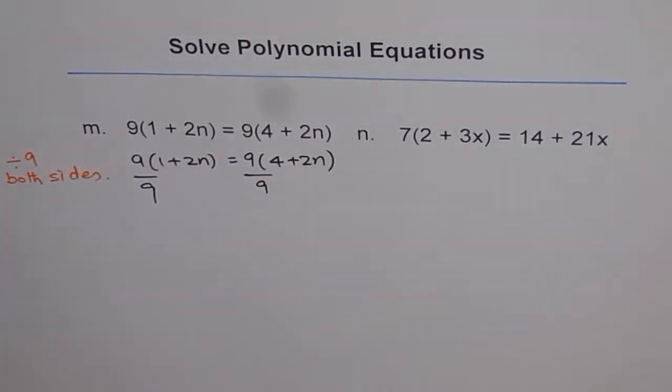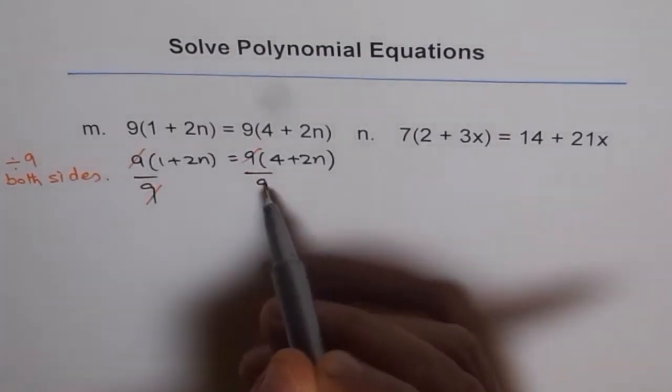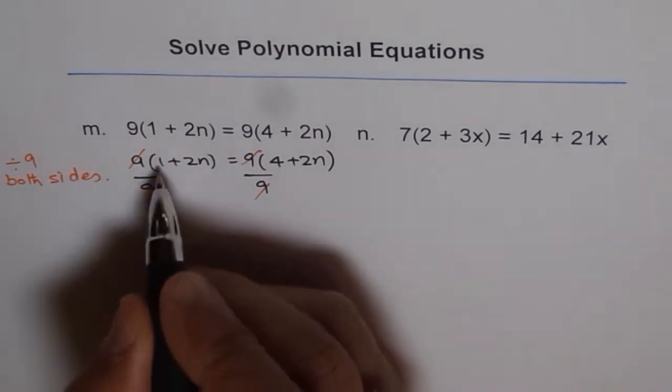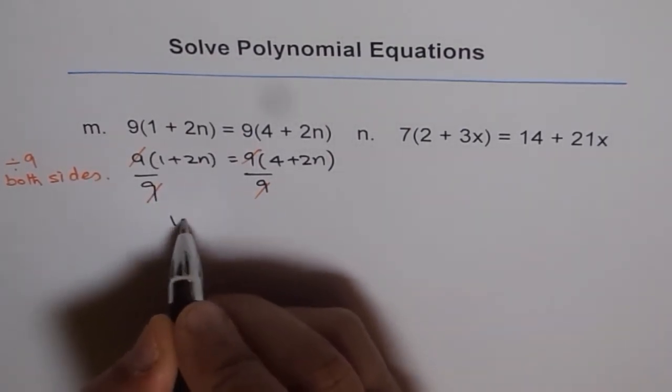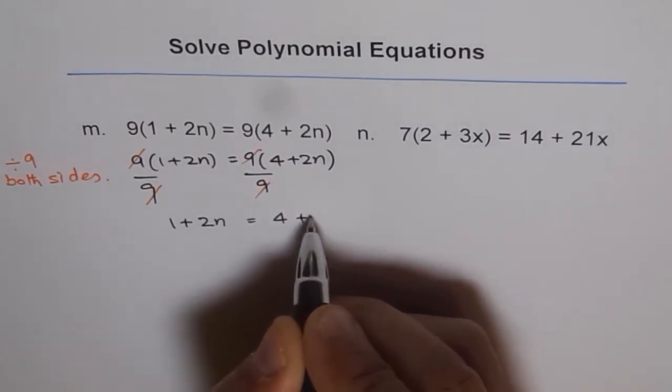In that case what happens? 9 gets cancelled with 9. Cancels means 9 divided by 9 is 1. So we are left with 1 plus 2n on the left side and 4 plus 2n on the right side.